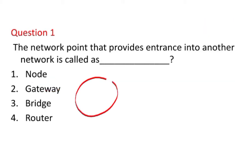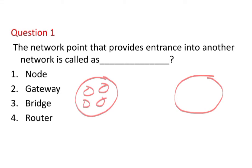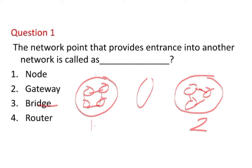Nodes refer to multiple computer systems within the same LAN. Bridges are used to connect all those computer systems together within a network. Routers are also central devices. But since the question says data needs to enter a different network — from LAN one to LAN two — the device used for that is a gateway. So the right answer is option number two, that is gateway.